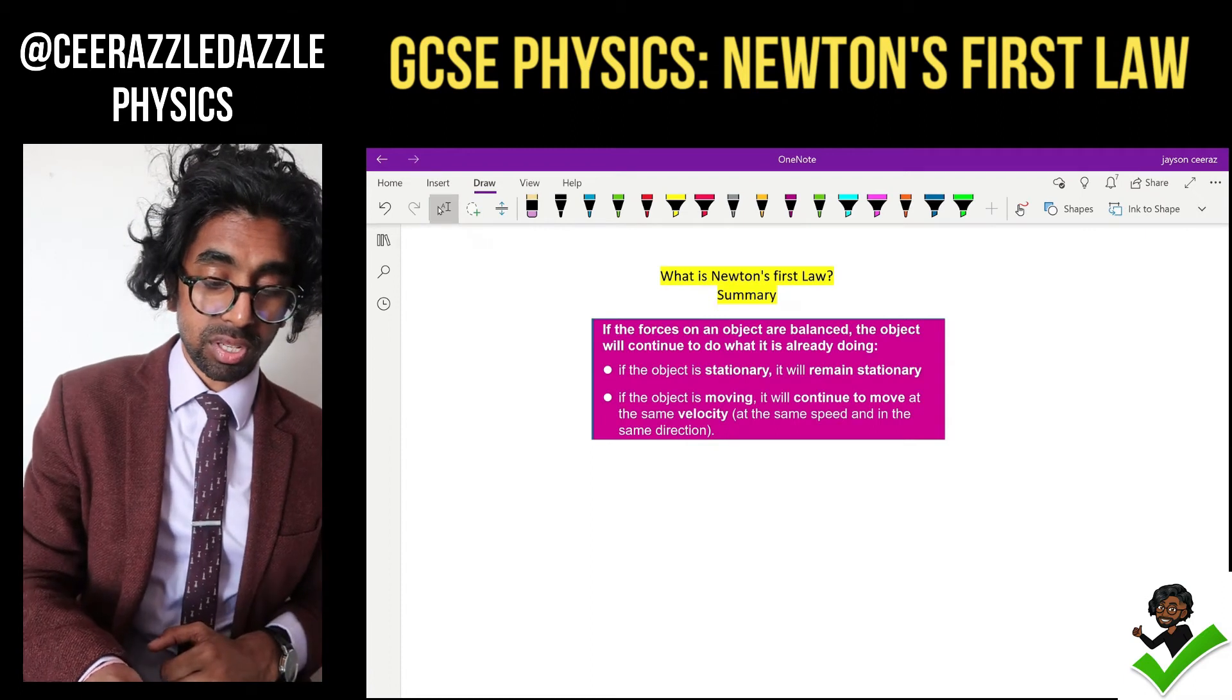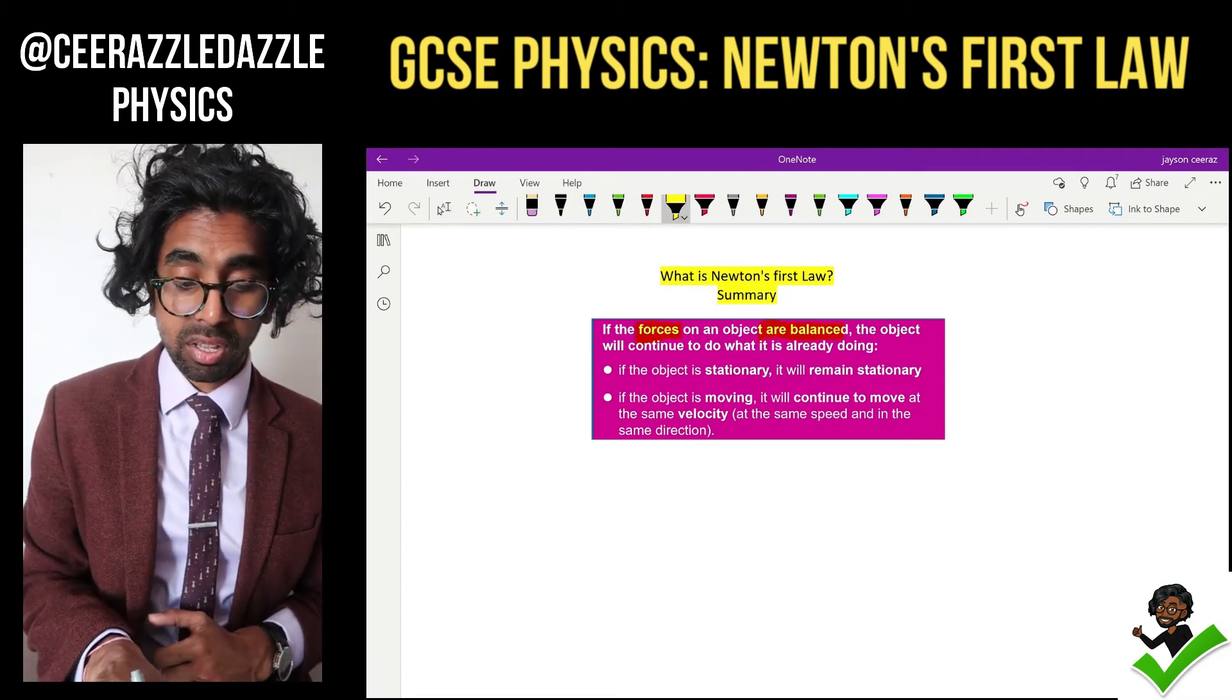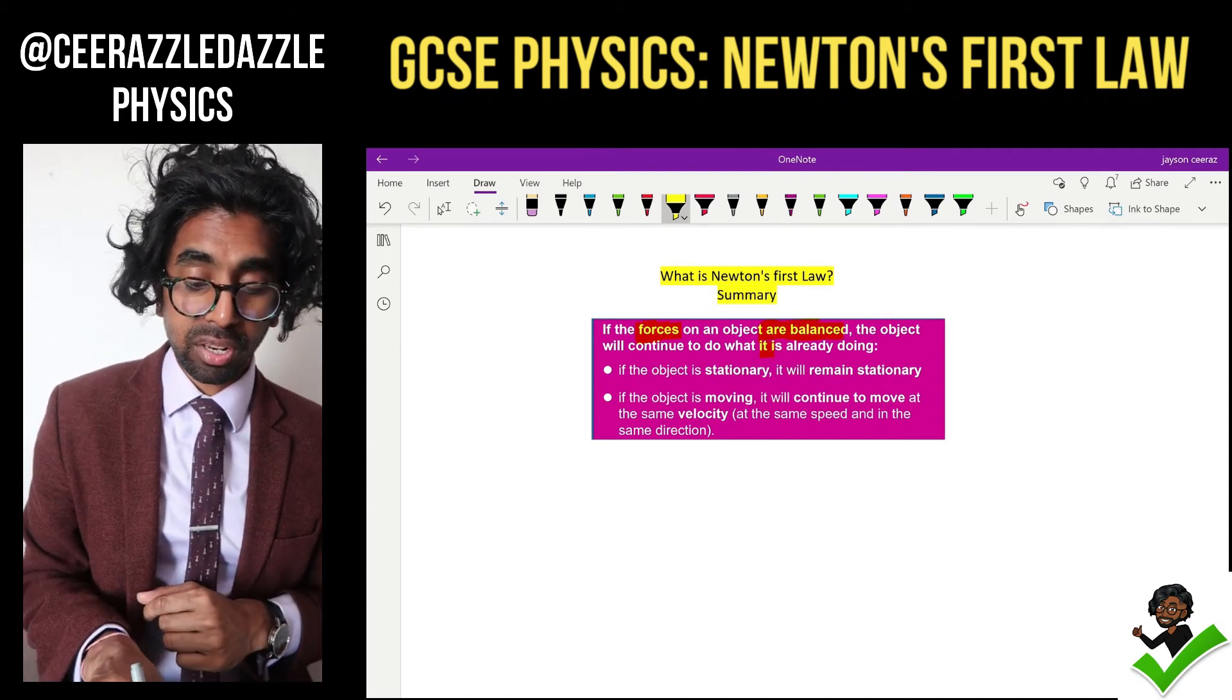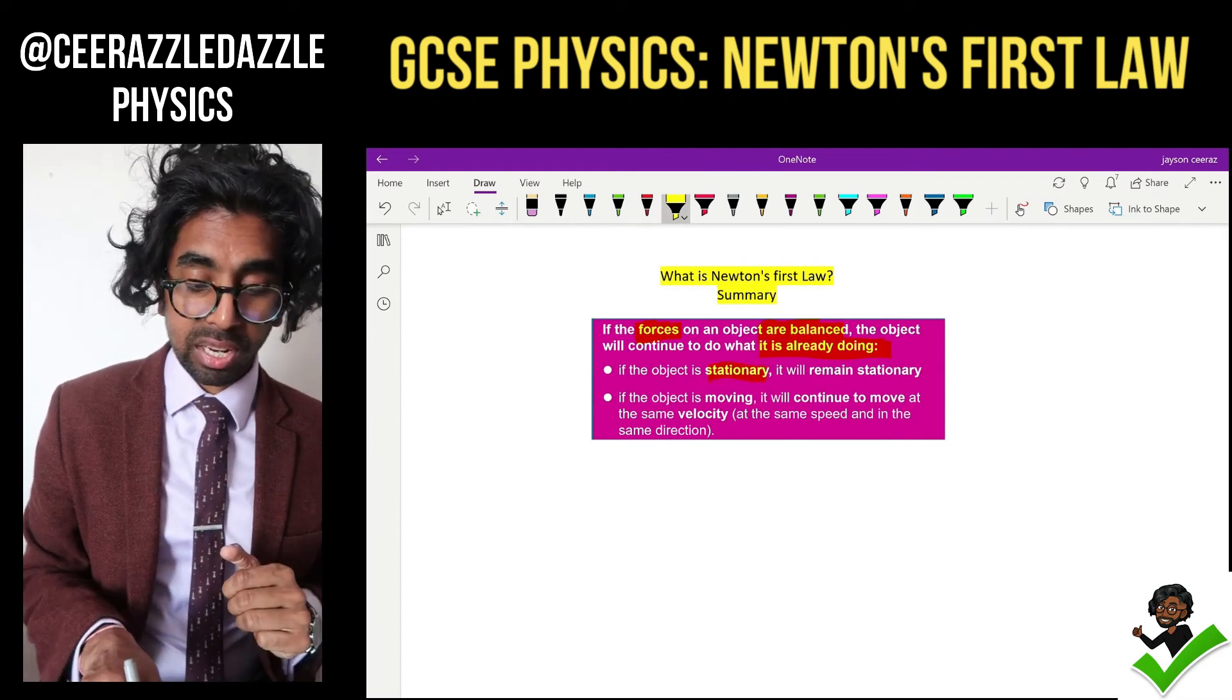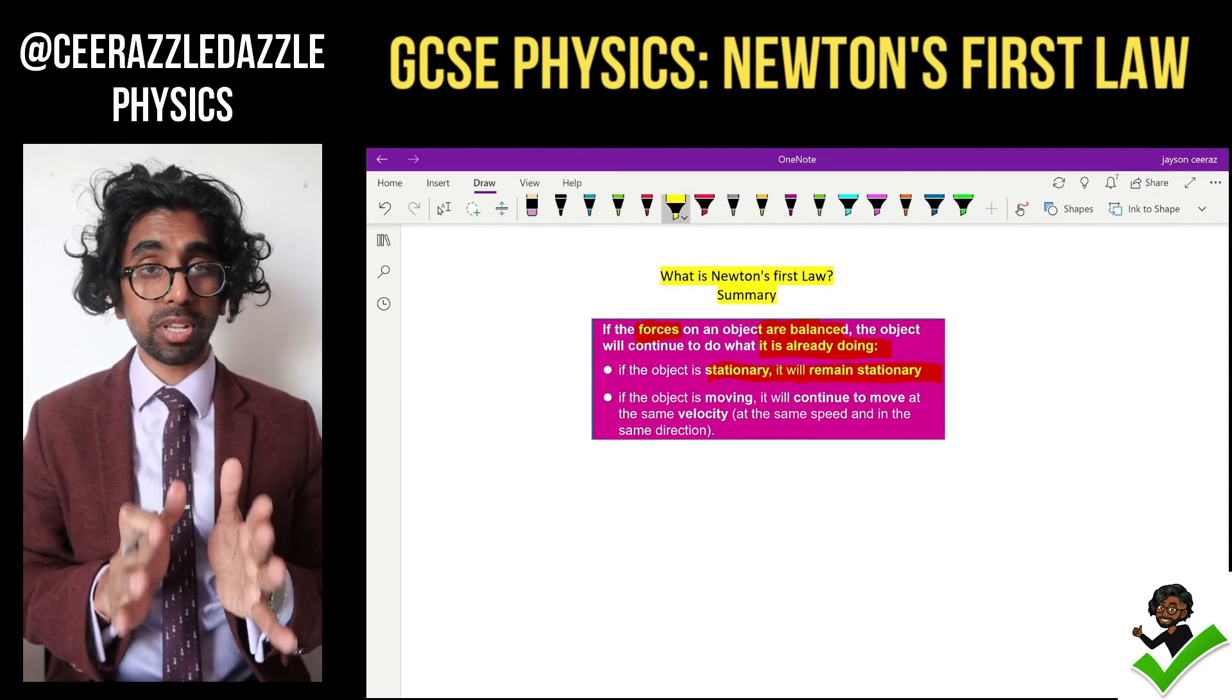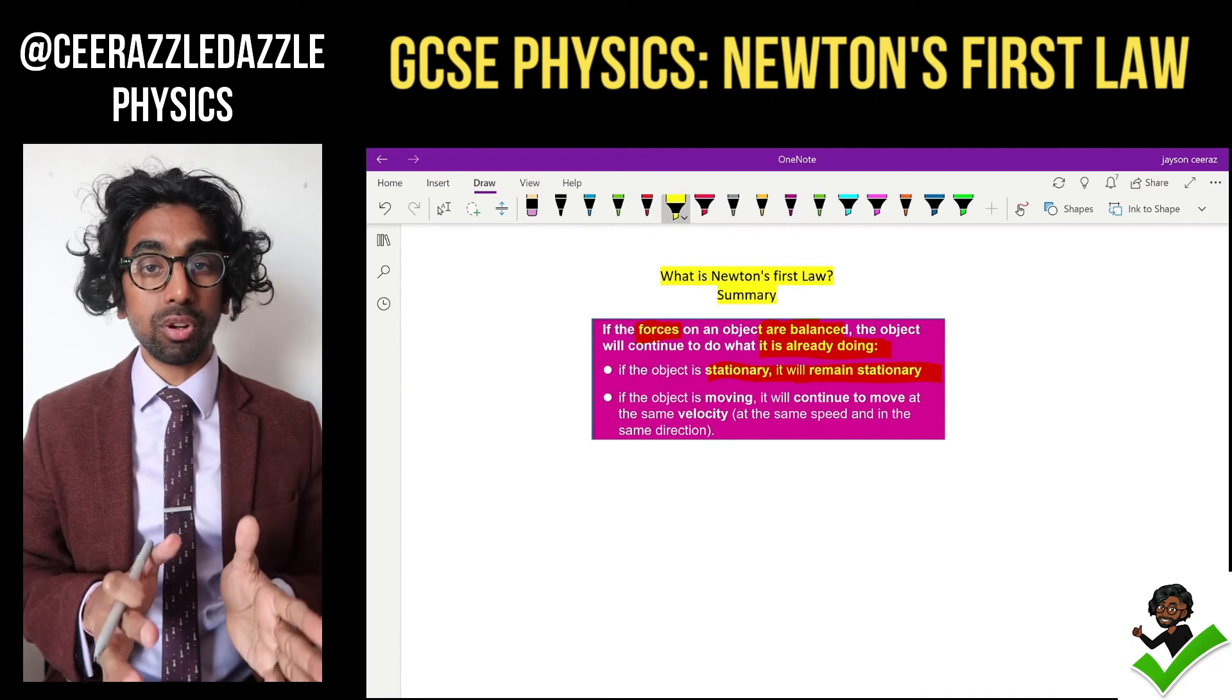If the forces on an object are balanced, the object will continue to do what it's already doing. So if it was not moving at the start, it will remain not moving. If the object is stationary, it will remain stationary. If the object is moving, it will move at a constant speed.